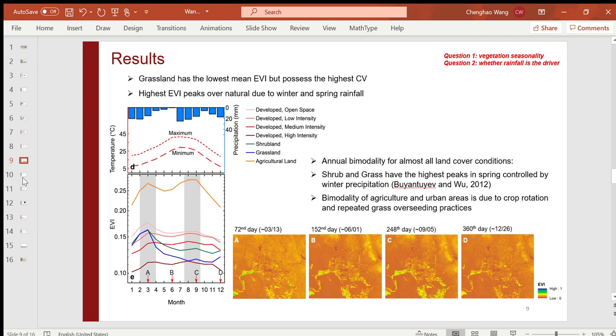Although the underlying drivers are different, for shrubland and grassland, the highest peaks are in spring, mainly because of winter precipitation, while for agriculture and urban areas, the drivers are crop rotation and repeated grass overseeding. This is also very clear from these satellite images here. You may observe the clear color change over agriculture and urban areas over time.